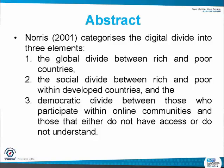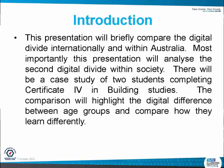For our abstract, Norris categorises the digital divide into three elements: the global divide between rich and poor, the social divide between rich and poor of developed countries, and a democratic divide between those who participate online and those who do not or do not have access. This presentation will briefly compare the digital divide internationally and within Australia, and most importantly will analyse the second digital divide within society. There will be a case study of two students completing Certificate 4, highlighting the digital difference between age groups and comparing how they learn differently.